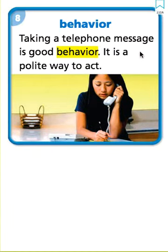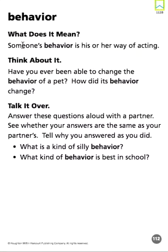Our eighth vocabulary word: behavior. Taking a telephone message is good behavior — it is a polite way to act. Let's read it together — behavior. What does it mean? Someone's behavior is his or her way of acting. Behavior. These are our eight vocabulary words that go along with this lesson.